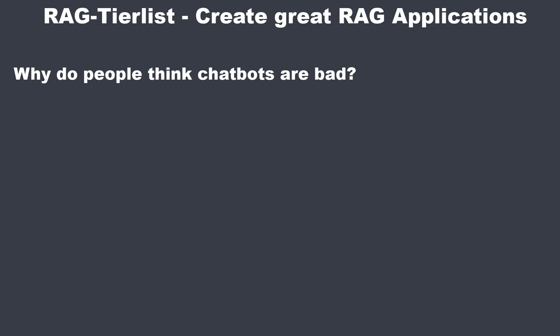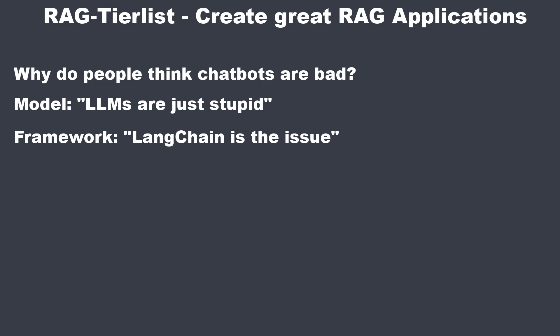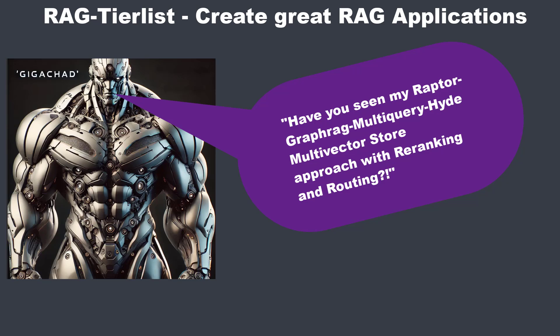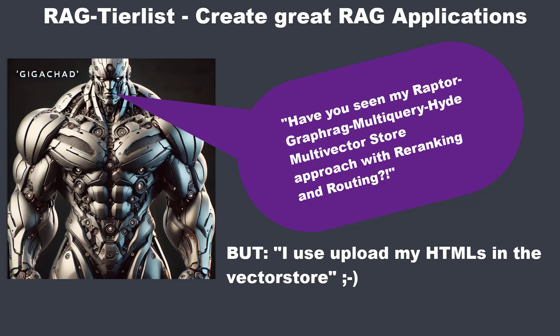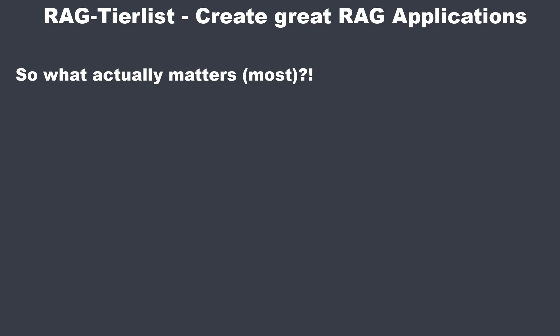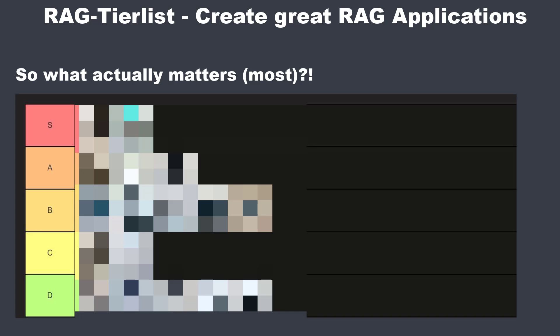When a chatbot does not behave as expected, some people blame the model for being stupid or blame frameworks like LangChain for being trash, since they don't offer sophisticated chatbots out of the box. Others introduce every advanced technique out there, but pass complete websites with HTML text to the model to create an answer. In this video, I will create a tier list of different LLM-focused techniques and technologies required to build great chatbots.